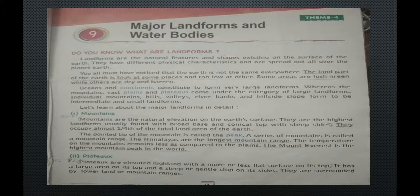First, mountains. All of you have seen the mountains. Mountains are the natural elevation on the earth's surface. They are the highest landforms, usually found with a broad base and conical top with steep sides. They occupy almost one-fourth of the total land area of the earth. The pointed tip of the mountain is called a peak. A series of mountains is called a mountain range. The Himalayas are the longest mountain range. The temperature on mountains remains less compared to the plains. Mount Everest is the highest mountain peak in the world.